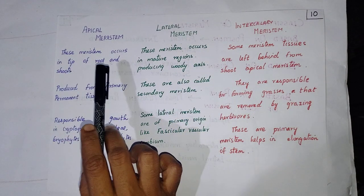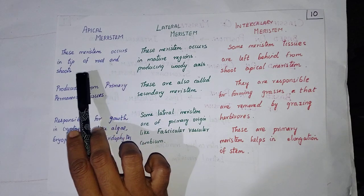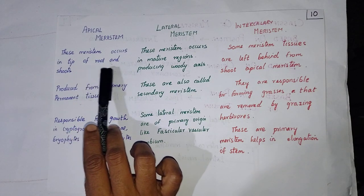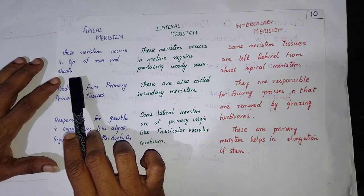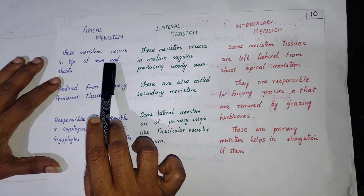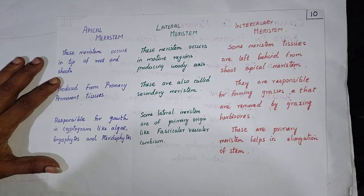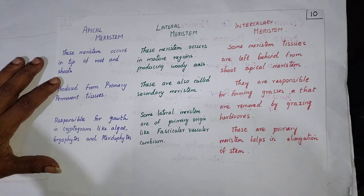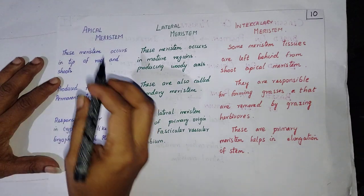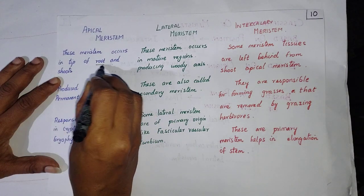The apical meristem occurs at the tip of the roots and also the shoot, and this is the only meristem that is found in the root of the plant.